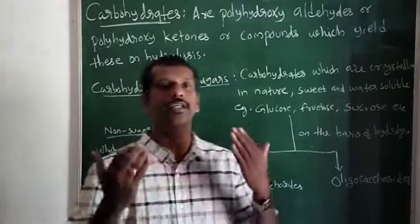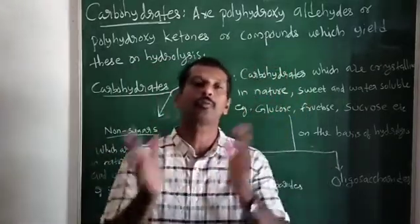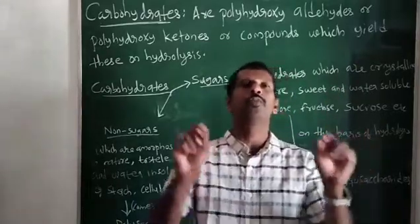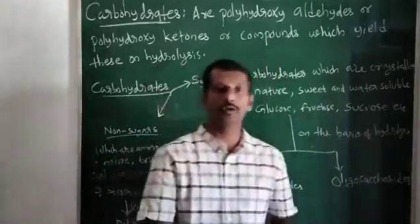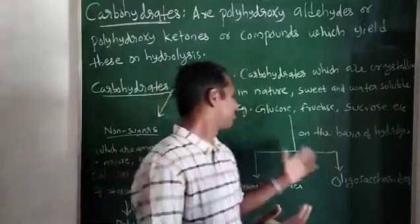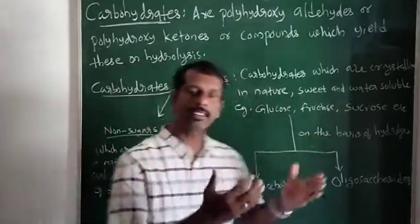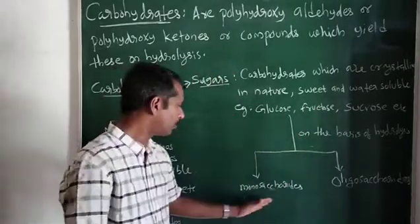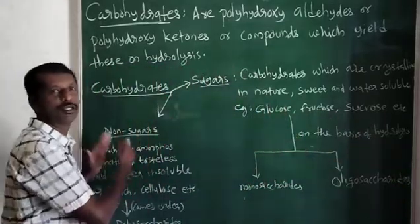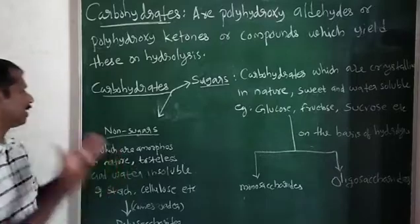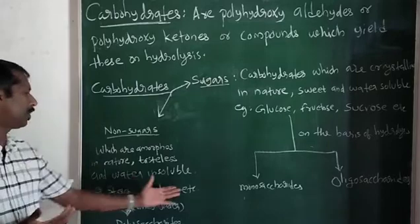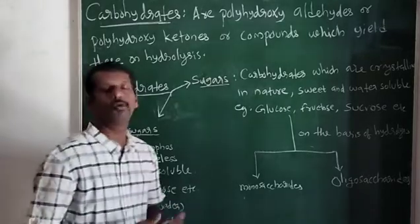To summarize: carbohydrates are polyhydroxy ketones or polyhydroxy aldehydes, broadly classified into sugars and non-sugars. Sugars are crystalline, sweet, and water soluble — examples include sucrose and fructose — and are further classified into monosaccharides and oligosaccharides. Non-sugars are amorphous, tasteless, and water insoluble — examples are starch and cellulose — and come under polysaccharides.